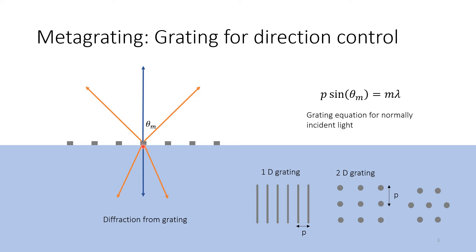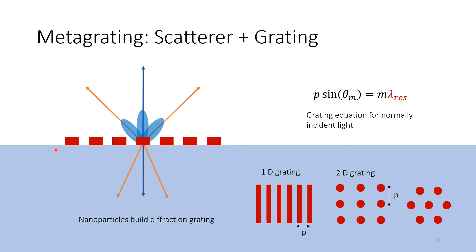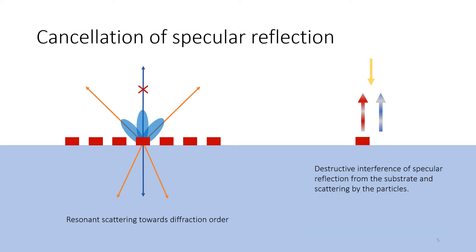In this case we see an example where we have first diffraction orders in reflection and transmission, as well as just the reflection back in the straight transmission. If we now combine the scatterer and the grating — putting the nanoparticles in a grating configuration — we can control the direction for the resonance wavelengths we chose before. An extra property of the metagrating is that we can cancel the specular reflection by tuning the scatterer such that scattering upwards and reflection from the substrate interfere destructively. This gives us a grating that scatters light only into the diffraction orders at the resonance wavelength, but not back to the zero order.